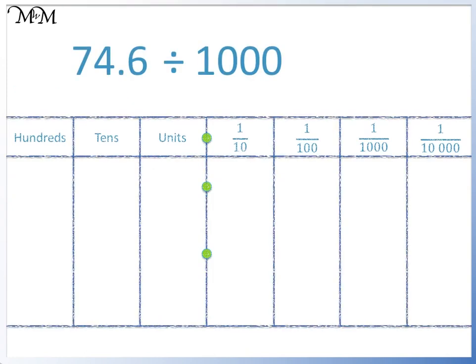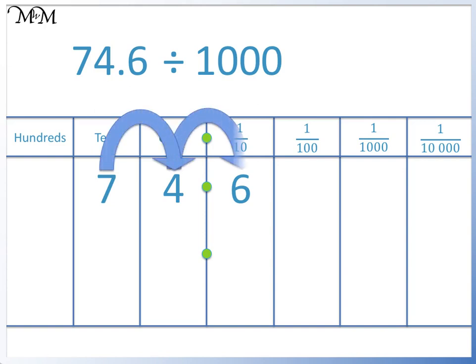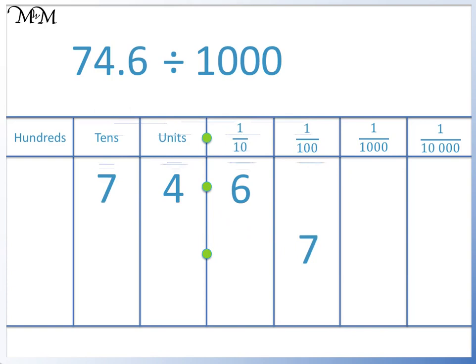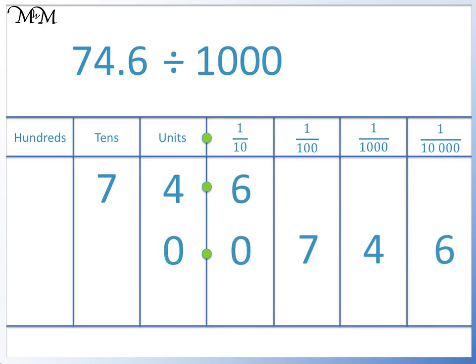Question 2: 74.6 divided by 1000. We start with the 7 and move it three places to the right: 1, 2, 3. The other two digits follow. We write in our zeros. 74.6 divided by 1000 equals 0.0746.